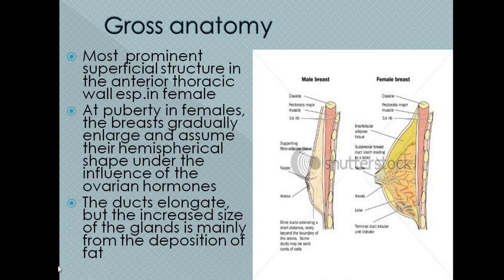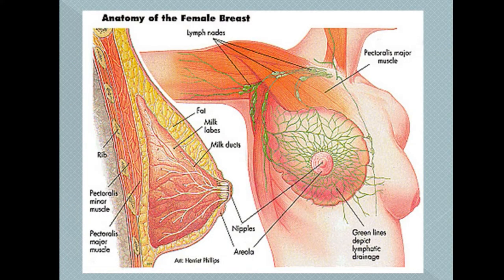At puberty, the breast gradually enlarges and assumes a hemispherical shape due to the influence of ovarian hormones. The ducts elongate, but the increase in size of the gland is mainly due to the deposition of fat during the pre-pubertal age. This fat decreases during proliferation of the gland parenchyma and alveolar hypertrophy.